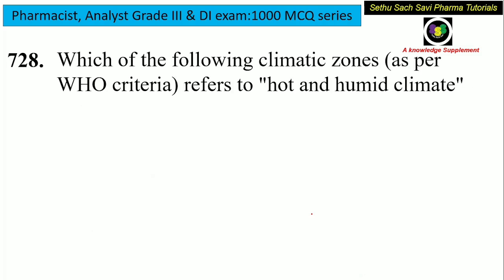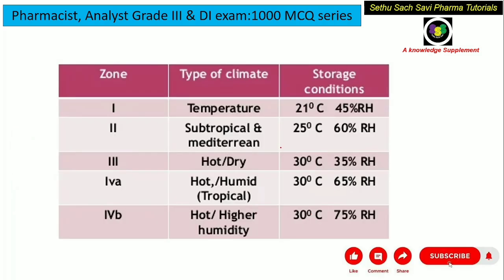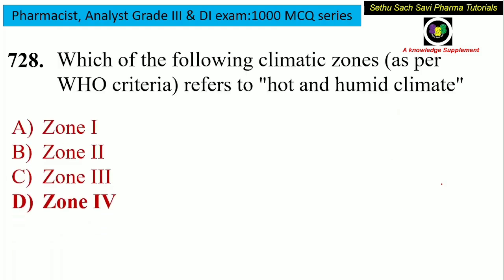Which of the following climatic zones, as per the WHO criteria, refers to hot and humid climate? Is it zone 1, zone 2, zone 3, or zone 4, which includes zone 4A and zone 4B? Hot and humid climates with higher humidity are mainly categorized under zone 4, that is zone 4A as well as zone 4B. So the answer for this question is zone 4.